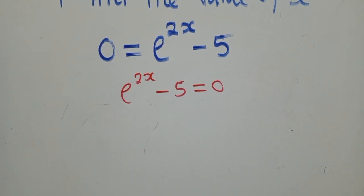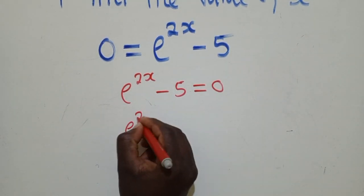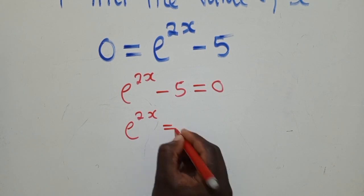So once we copy like that, we now group the like terms. So we shall have e power 2x is equal to 5.